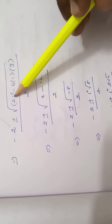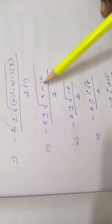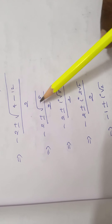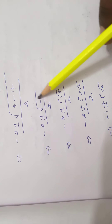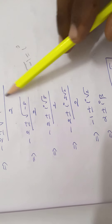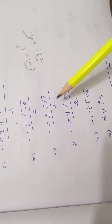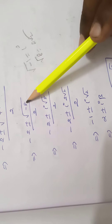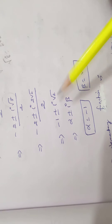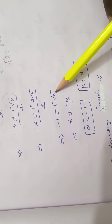Substituting: m = (-2 ± √(4 - 12)) / 2 = (-2 ± √(-8)) / 2. Since √(-1) = i, we get √(-8) = 2√2·i. So m = (-2 ± 2√2·i) / 2 = -1 ± √2·i.